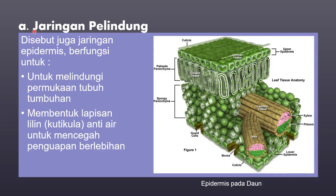Jaringan dewasa yang pertama yaitu jaringan pelindung. Jaringan pelindung disebut juga dengan jaringan epidermis. Kenapa dikatakan pelindung? Karena jaringan epidermis berada di bagian paling luar pada jaringan tumbuhan, baik di akar, batang, maupun daun. Jaringan pelindung ini berfungsi untuk melindungi permukaan tubuh tumbuhan. Pada daun, jaringan pelindung ini juga membentuk lapisan lilin atau kutikula sebagai anti air untuk mencegah penguapan yang berlebihan pada daun.